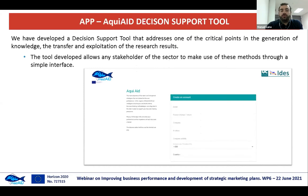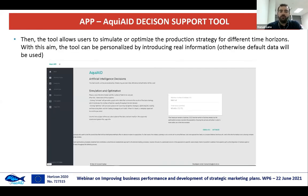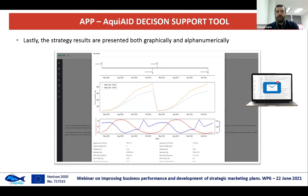On this basis, we have also developed a web-based application — a decision support tool — that allows us to start the process of transferring and exploiting the research results. This tool is open to any stakeholders, who are asked to log on and express their preferences about the importance of each decision criterion to create a profile. They can then introduce their own data via the menu on the left and test how the simulation and optimization method works. To test how artificial intelligence would improve farm results, the report — which takes five to ten minutes to generate — is sent by email to the decision maker.